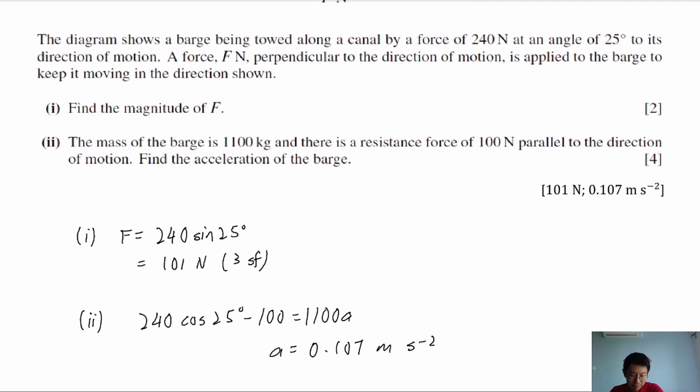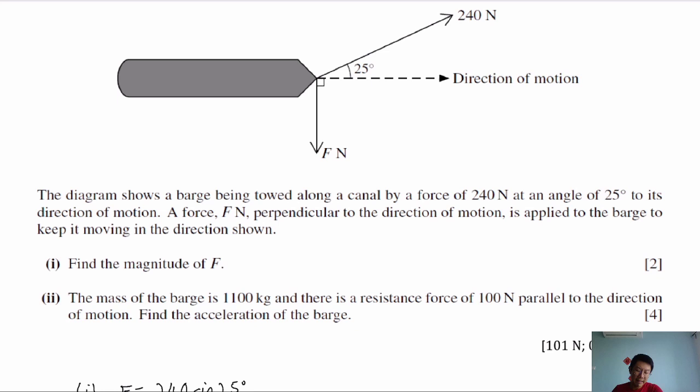For question 3, a barge is being towed along a canal by a force of 240 N at an angle of 25 degrees to its direction of motion. A force F N is perpendicular to the direction of motion applied to keep the barge moving in the direction shown. First, find the magnitude of F.